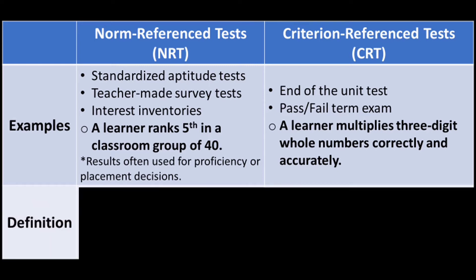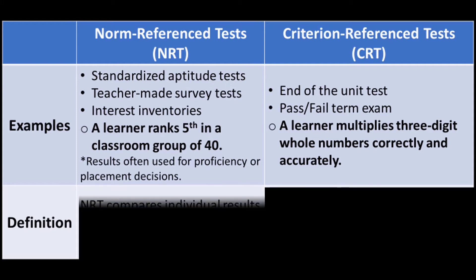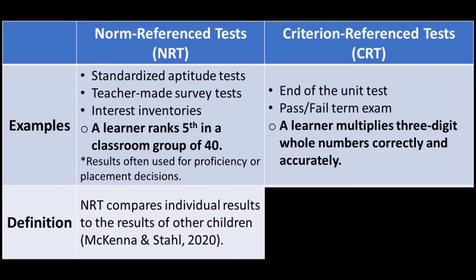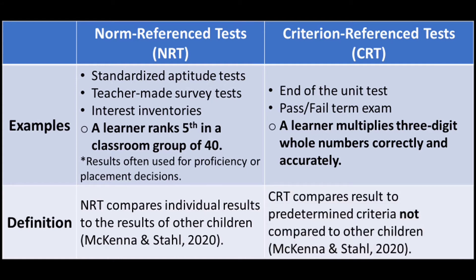As to their definitions, Norm Reference Tests compare individual results to the results of other children. Criterion Reference Tests compare results to predetermined criteria, not compared to other children.